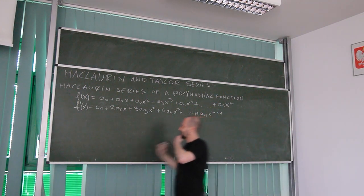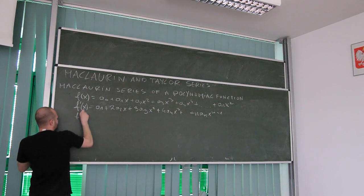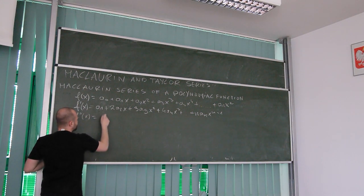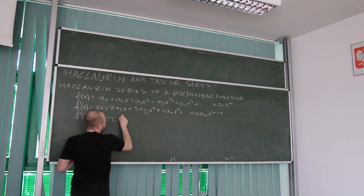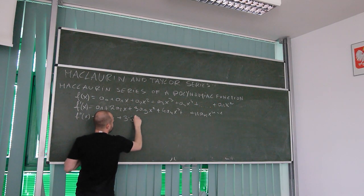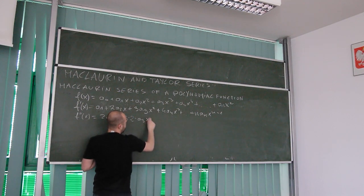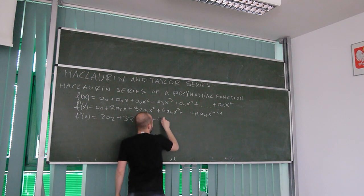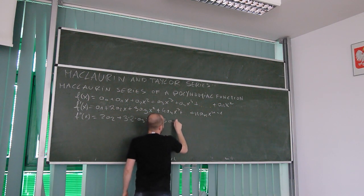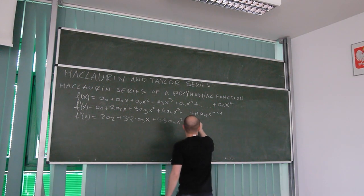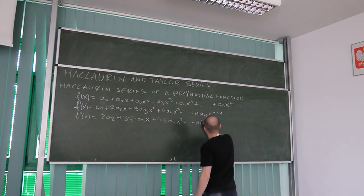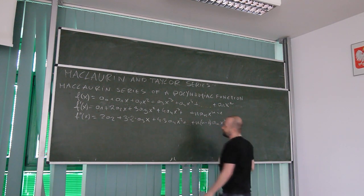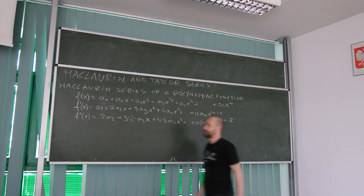Now we calculate the second derivative. The constant term vanishes. We get 2a₂ plus 3·2·a₃x plus 4·3·a₄x² plus ... until n(n-1)aₙxⁿ⁻².